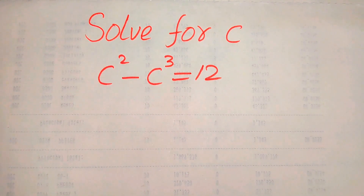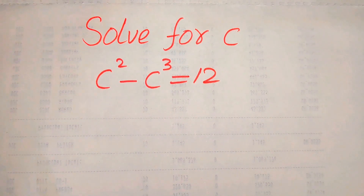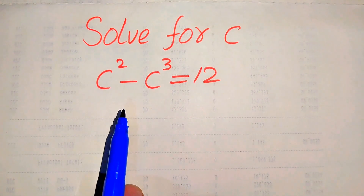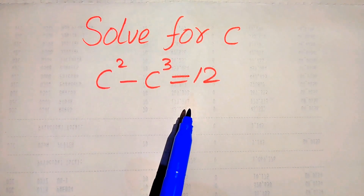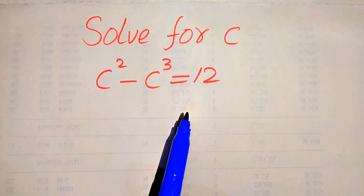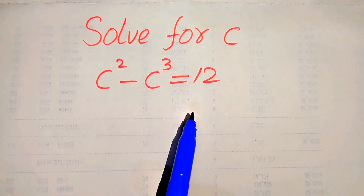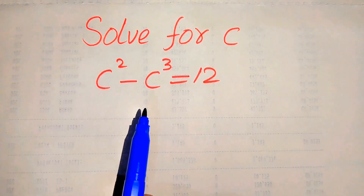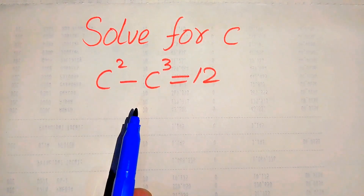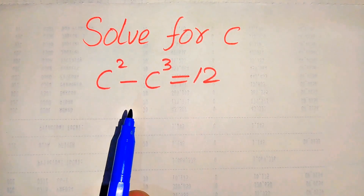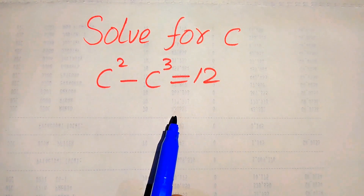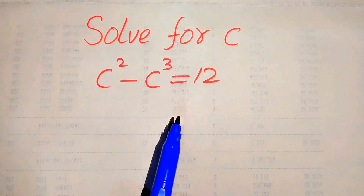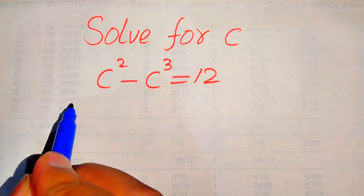Hello everyone. How to solve this problem for the values of c if we have c squared minus c cubed equals 12. This is a cubic equation — in other words, the highest power is 3 — which means this equation has 3 roots. We will find all three roots of this equation.